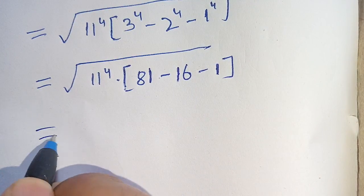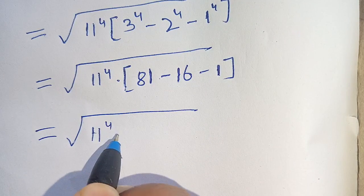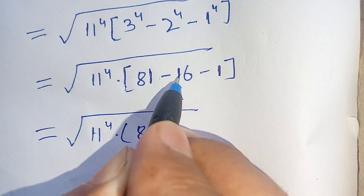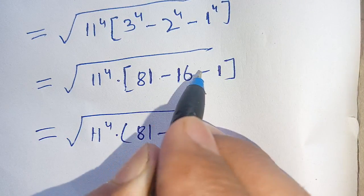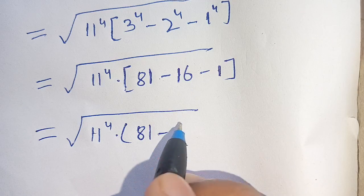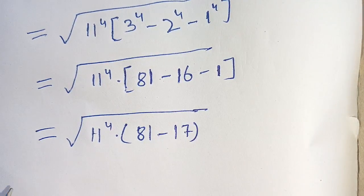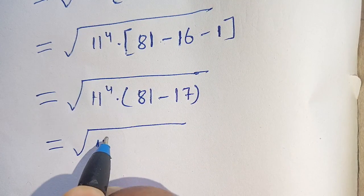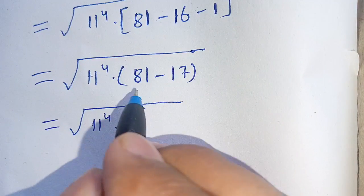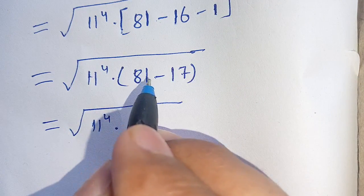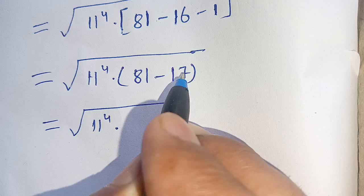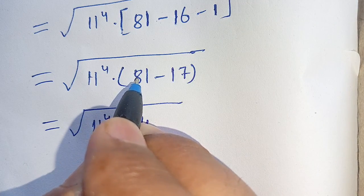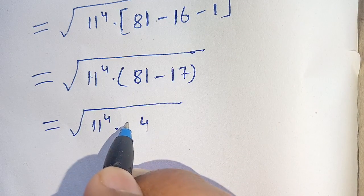So inside the bracket we have 81 minus 16 minus 1. That gives us 81 minus 17, which equals 64.